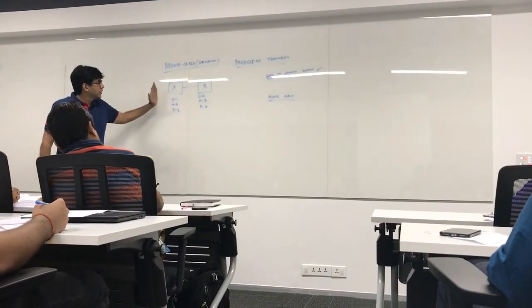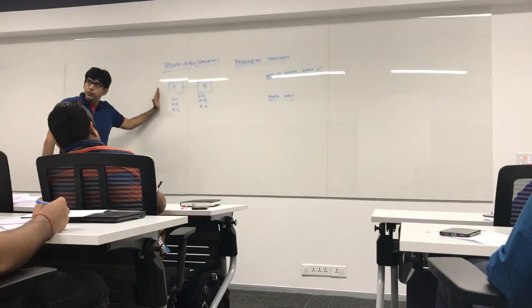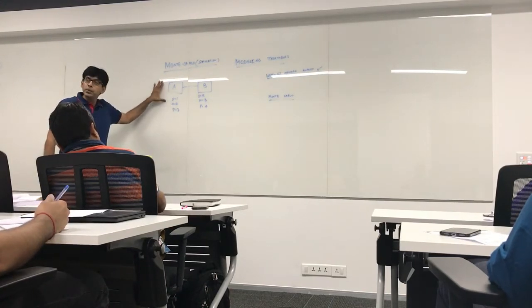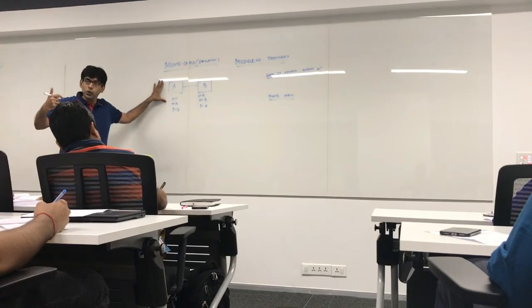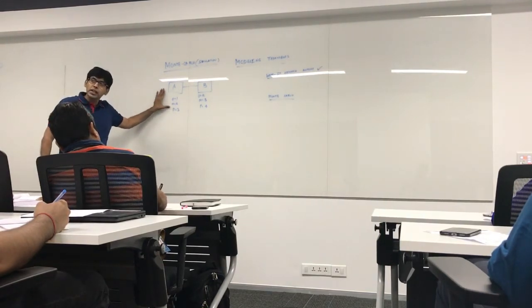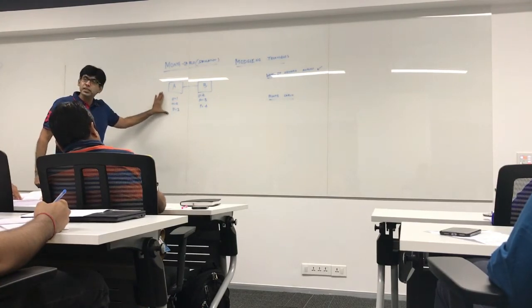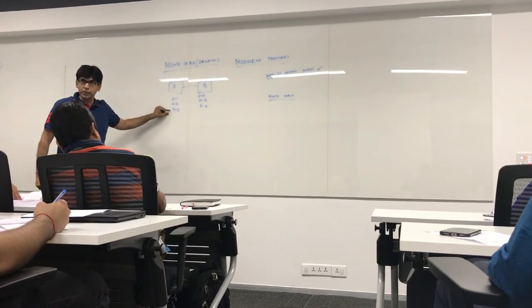Now in the best case scenario activity A can be completed in one day. Optimistic time for activity A is 1. Most likely scenario activity A can be completed in two days. And in the worst case scenario this can be completed in three days which is pessimistic time.